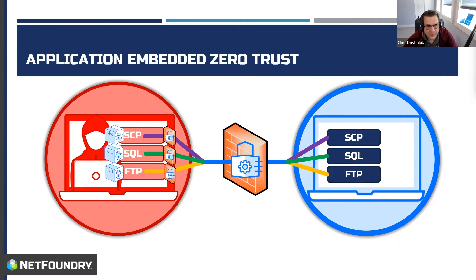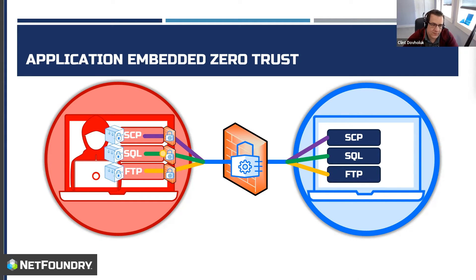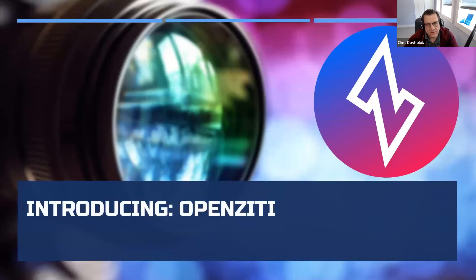What happens if we have three secure apps on a compromised machine — an SCP app, a SQL app, and an FTP app? SCP can send data to SCP, SQL to SQL, FTP to FTP — perfectly fine. But when a hacker tries to use the SCP application to send traffic to FTP, SCP can't address FTP. That little built-in firewall — that zero trust least privilege — is baked into the application itself. The SCP application doesn't even know how to address the FTP server. The same is true for SQL trying to access FTP or SCP. It's all locked behind zero trust principles baked into the application.